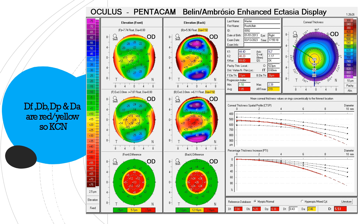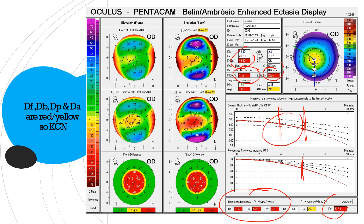This is an example of the BADD total display. Three of the parameters are in red and total D is in red. Look at the Belin line — it leaves the dotted line before the 6 mm mark, actually at the 4 mm mark, and the same in the PIT line. K max is high, front elevation is high, back elevation is high, average PPI is high, and ARTmax is in a very suspicious range. So this is indicative of keratoconus.